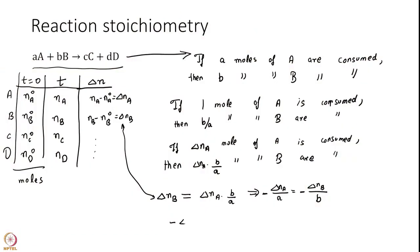You can work the same thing out for C and D as well and by convention then what we write is minus delta NA over a equal to minus delta NB over b equal to delta NC over c equal to delta ND over d.